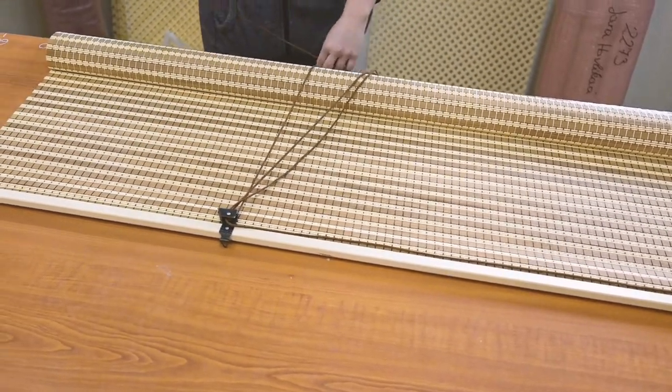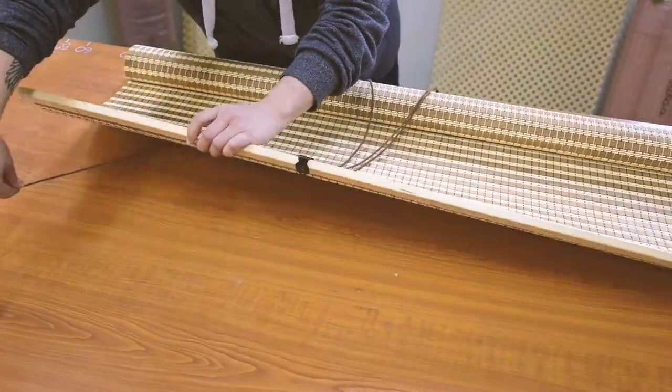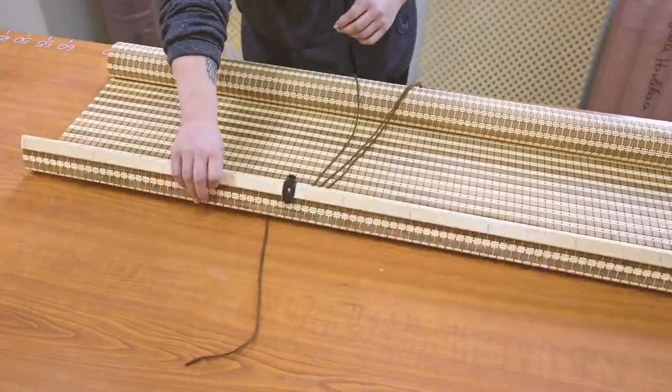Make sure that the cords are under the button guide when threading and unthreading. Put the end of the cord behind the blinds as well.